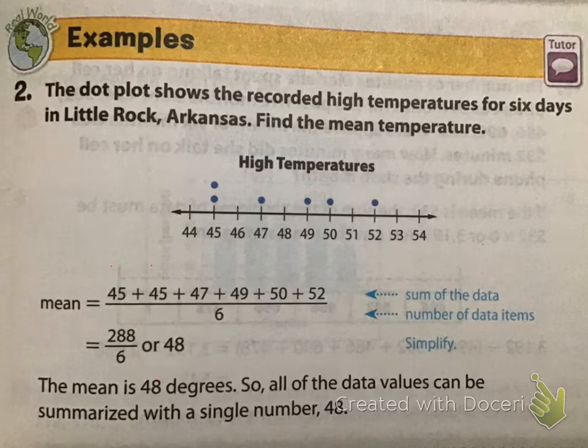So, all the data values can be summarized with that single number, 48. If you are asking for what your grade is, your grade is an average made up of all of the things that you contributed. Essentially, it's adding up all of the points and dividing them over the number of assignments. So, our grades are a great example of an average, of a mean.